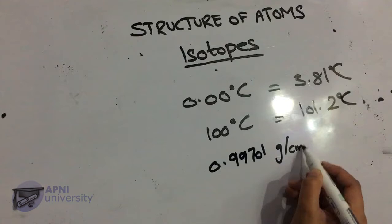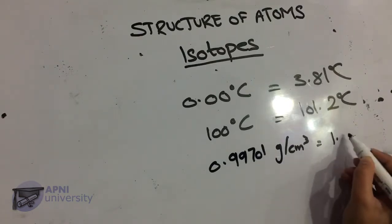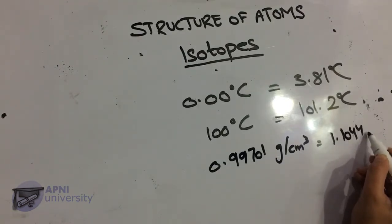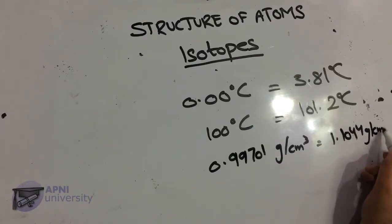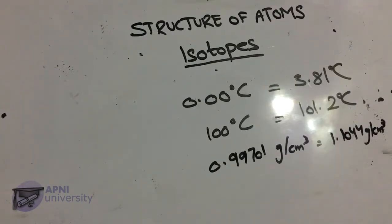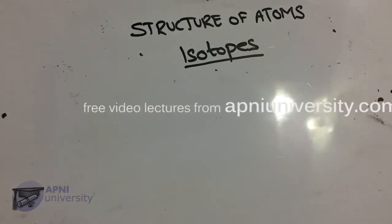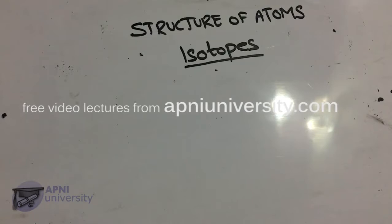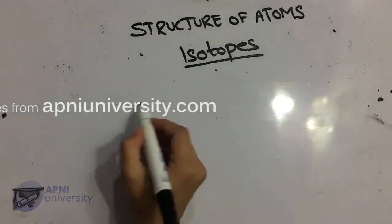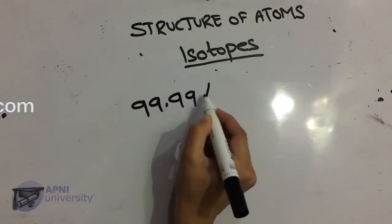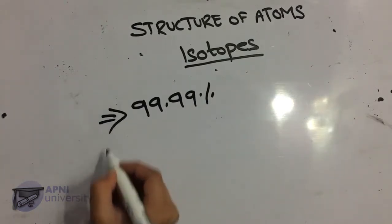The melting point of ordinary water is 0.00°C. The density at 25°C for ordinary water is 0.99701 g/cm³, and for heavy water the density at 25°C is 1.1004 g/cm³. The percentage of naturally occurring protium hydrogen is 99.99%.